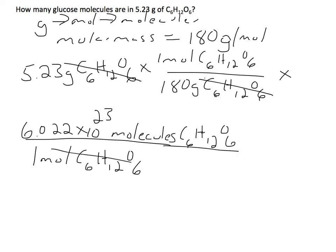Okay, so then the moles are going to cancel, and so then we've converted to molecules, and so our final answer is 1.75 times 10 to the 22nd molecules of C6H12O6.